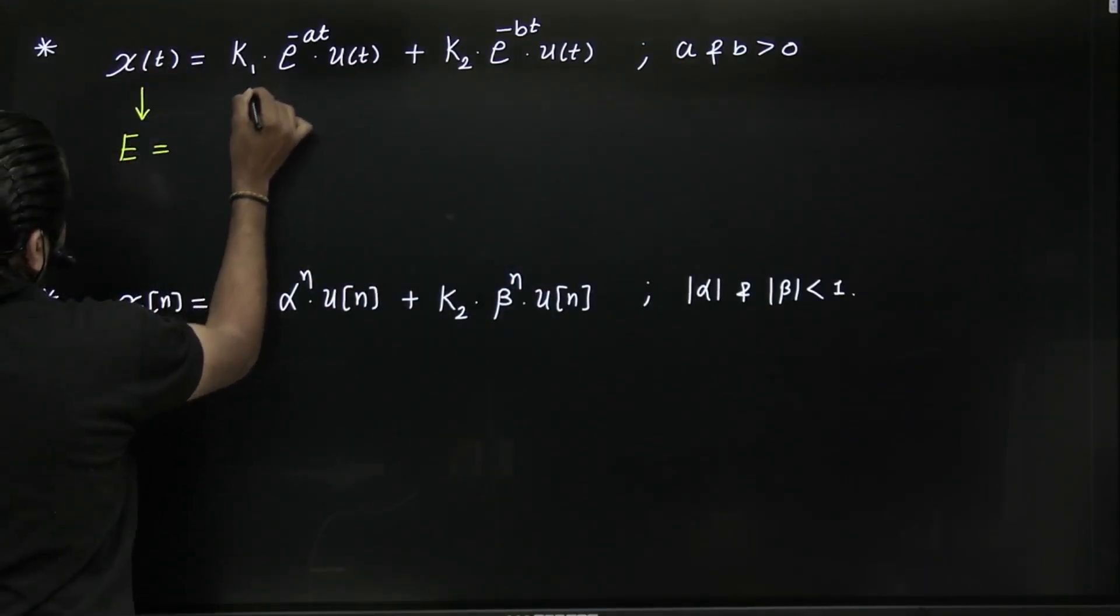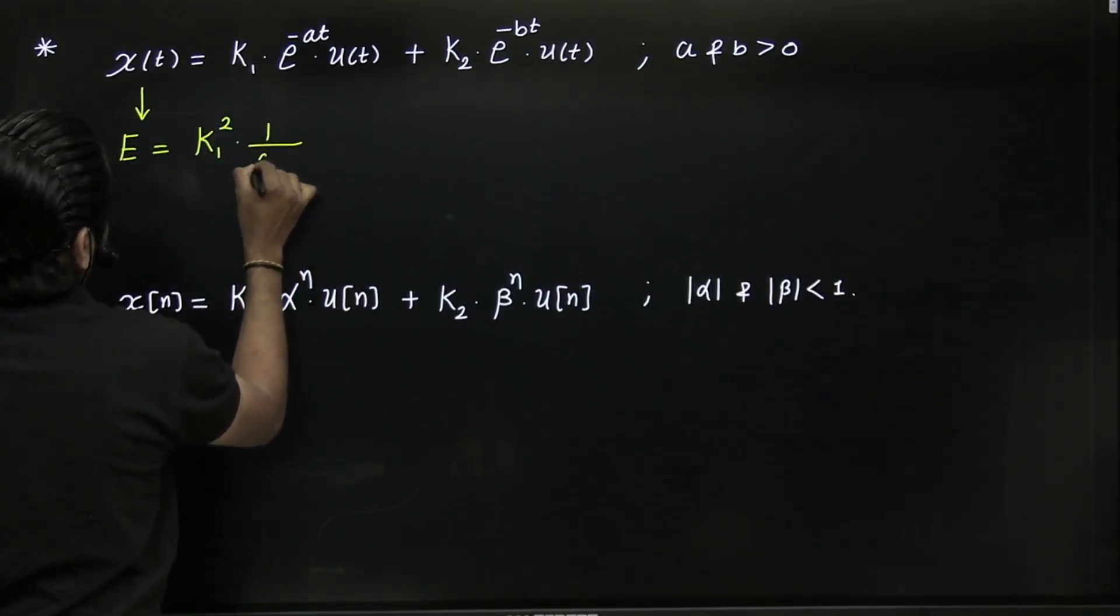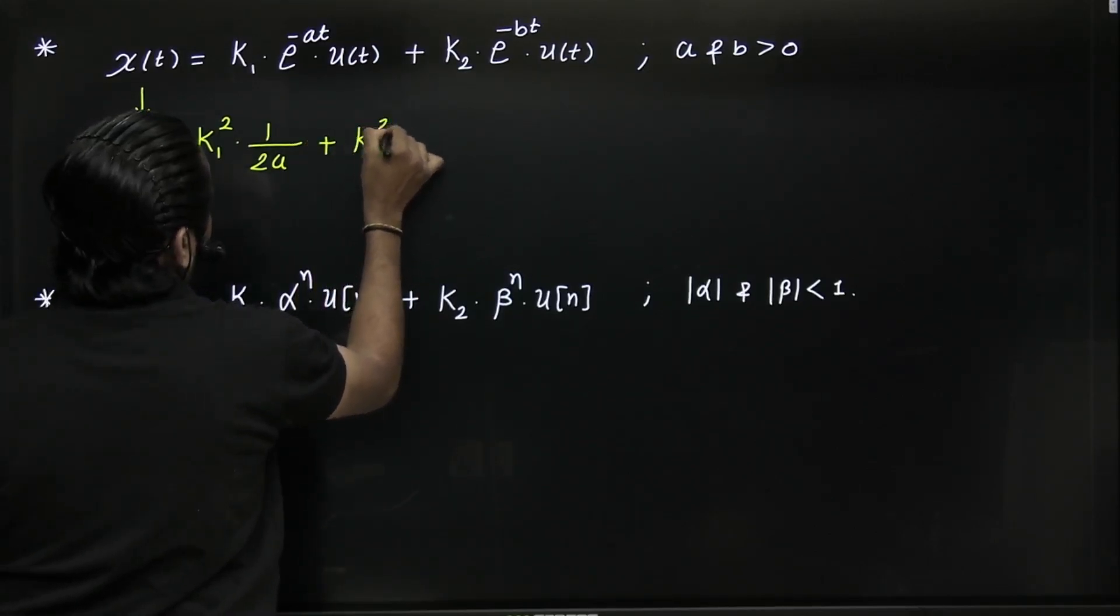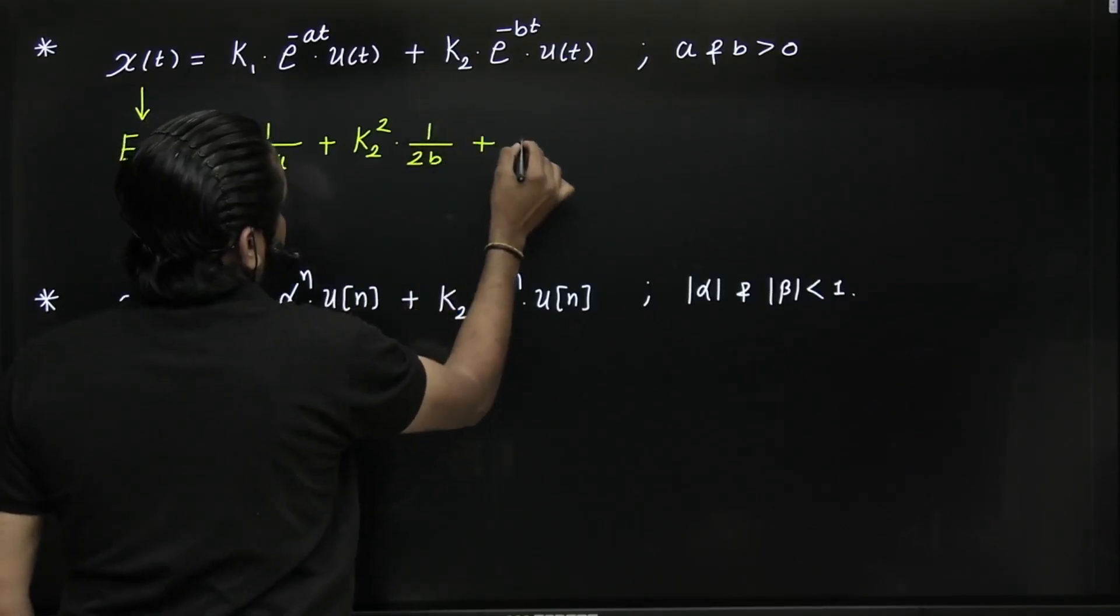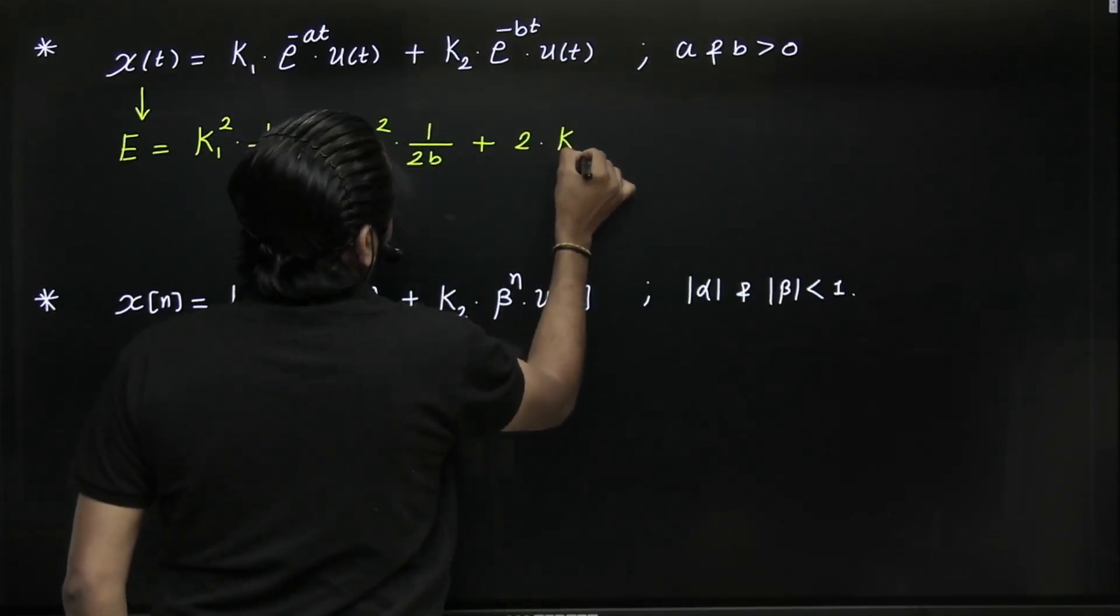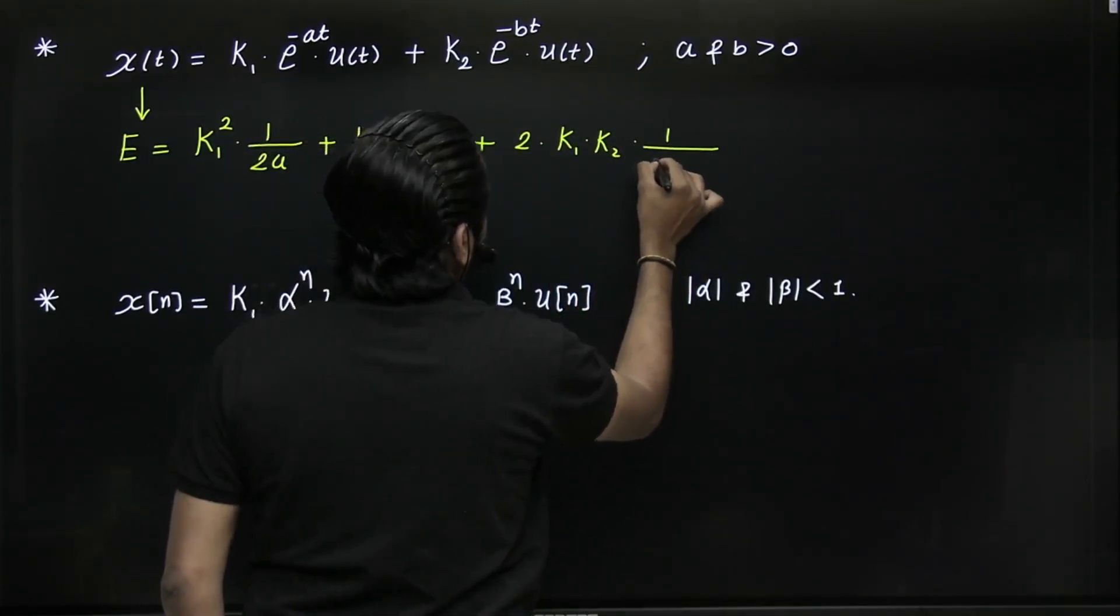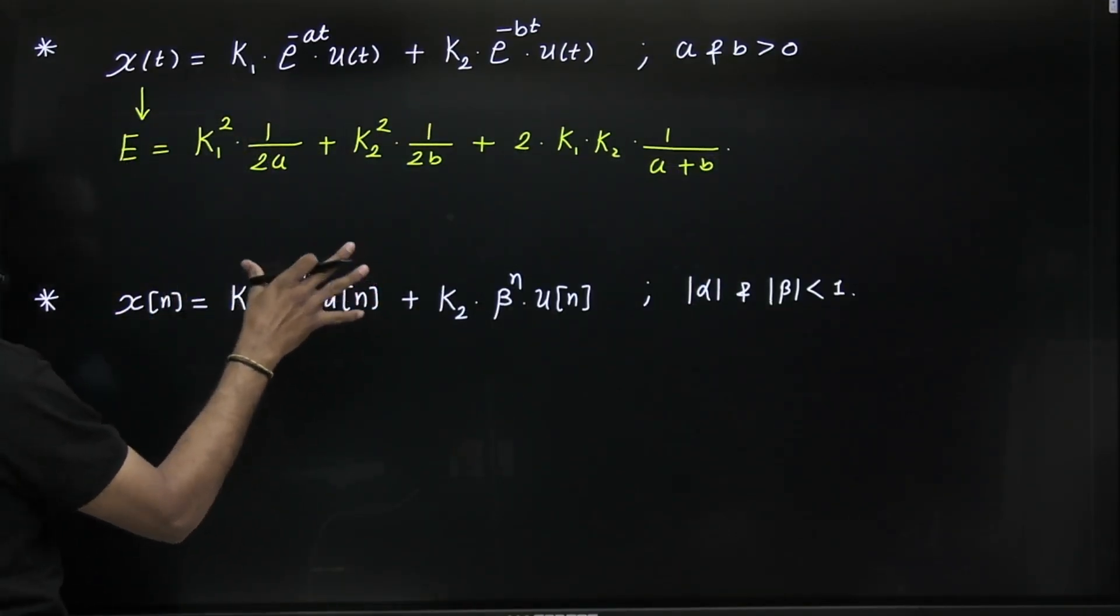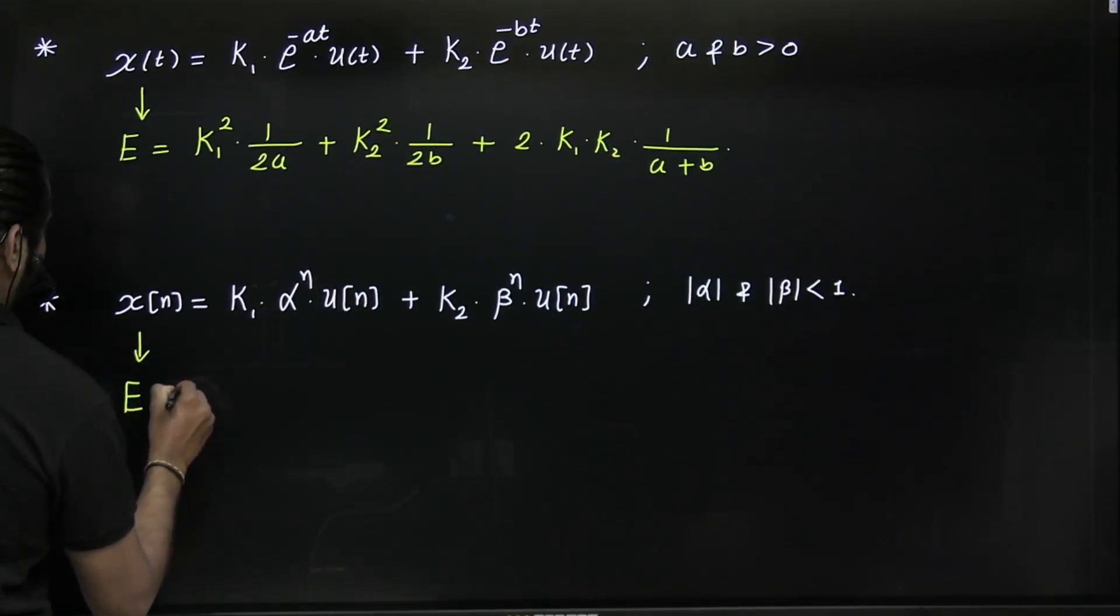is given by: E = k₁² × 1/(2a) + k₂² × 1/(2b) + 2k₁k₂ × 1/(a+b). This is a shortcut. Similarly, if it is in discrete time, then the energy of this signal is